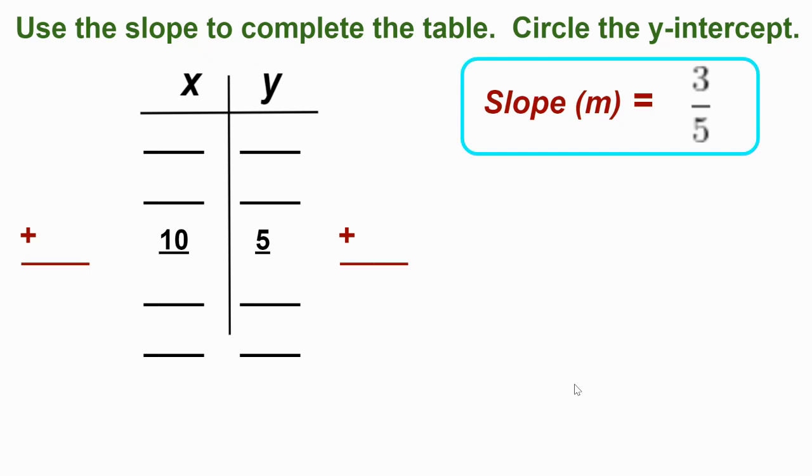We've got a slope of 3 fifths, rise over run, y over x. So that 3 is increasing in the y column, and the 5 is increasing in the x column. Let's go ahead and add the 3 in the y column. 5 plus 3 is 8, 8 plus 3 is 11. All right, we're good, just like before, but now we've got to work backwards.